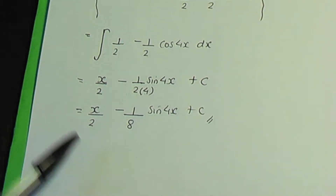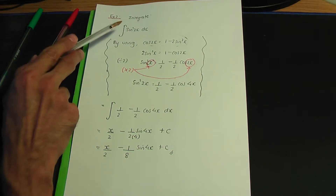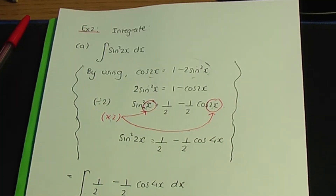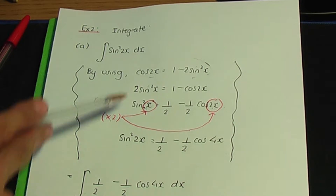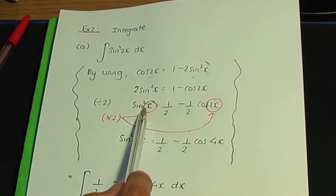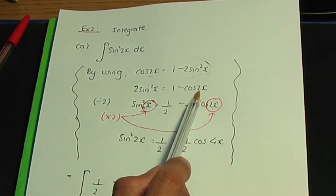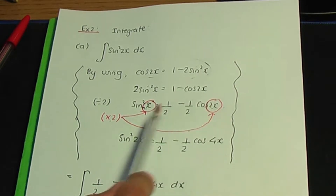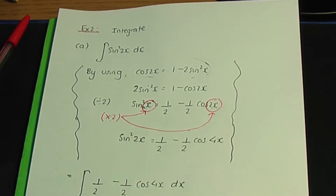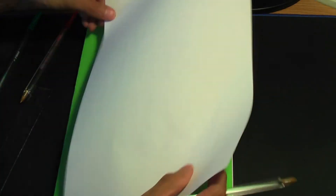So the final answer to part a is x/2 − (1/8)sin(4x) + c. The key step is using the double angle for cos, rearranging for sin squared, and multiplying only the angles by 2 to match the 2x in the original integral.